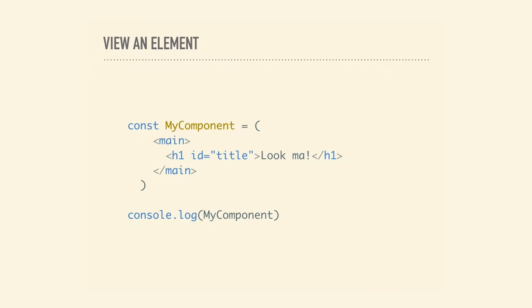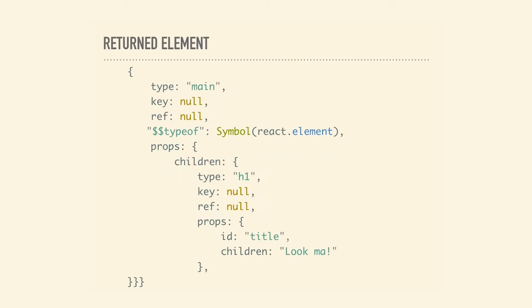If you'd like to see an example of an element on your own, you can go write this in an index file right now. Define a JSX expression — not even a function — and then log it. You'll actually get everything I just showed you. You'll also see some internal properties prepended with underscores — those are for React's internal use and you're not supposed to use those. Also note: there's nothing wrong with generating elements this way, but it's not expressive or maintainable. That's why JSX exists in the first place.